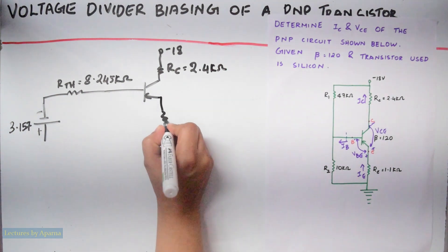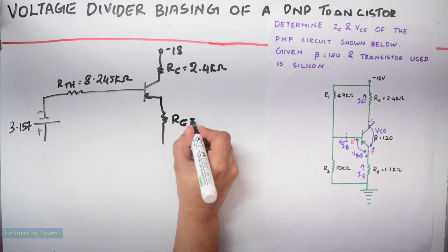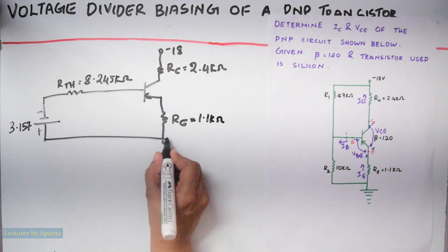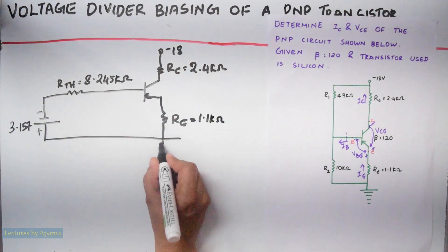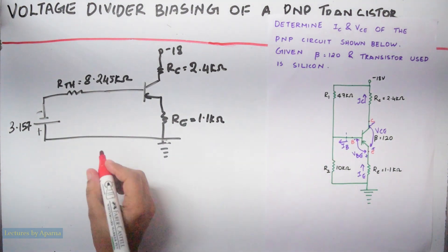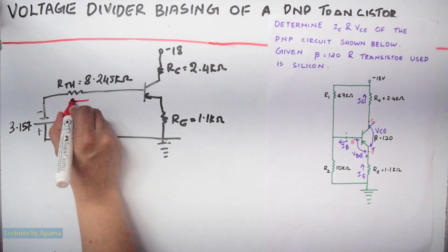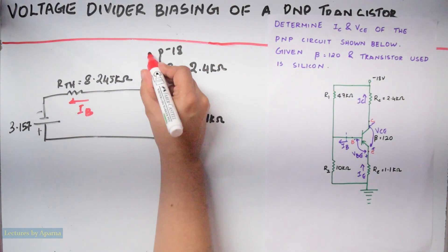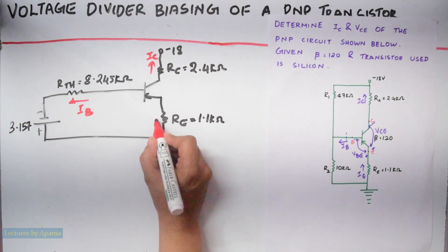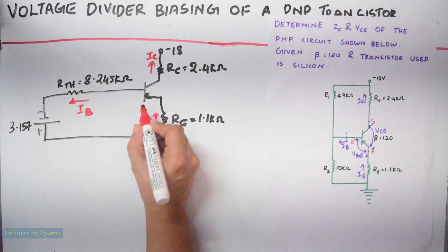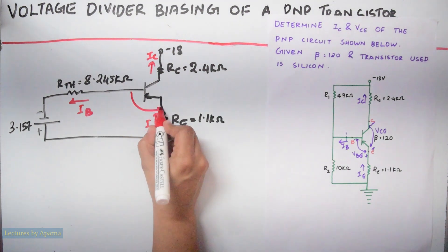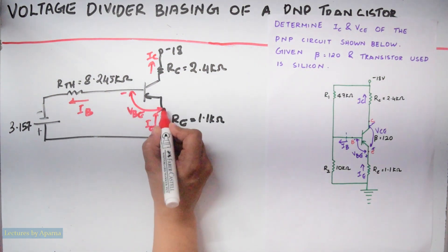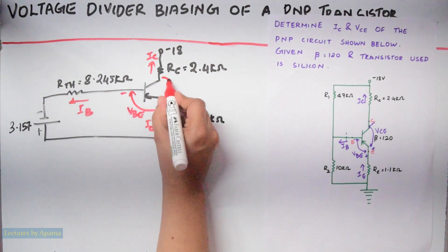RE is equal to 1.1 kilohms, connected to ground. This is IB, this is IC, this is IE. We also label VB and VC.